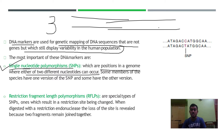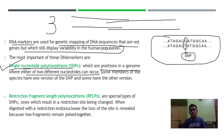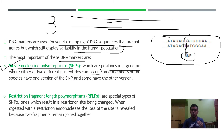SNPs are observed at particular positions where we find two different nucleotides. Here is an example of SNPs — you can see two different nucleotides at the same position. These are the positions handled by these DNA markers, which mark sequences that have two different nucleotides at the same location.